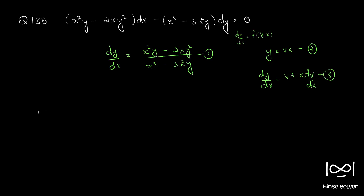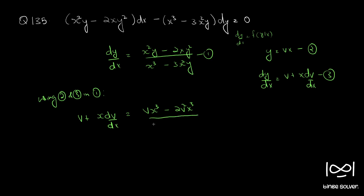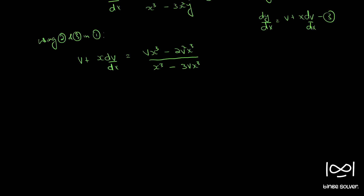Using equations 2 and 3 in equation 1, we get v plus x dv by dx equal to (vx cubed minus 2v squared x cubed) divided by (x cubed minus 3vx cubed). Cancelling x cubed from numerator and denominator and bringing v to the right-hand side, we have x dv by dx equal to (v minus 2v squared) divided by (1 minus 3v) minus v.